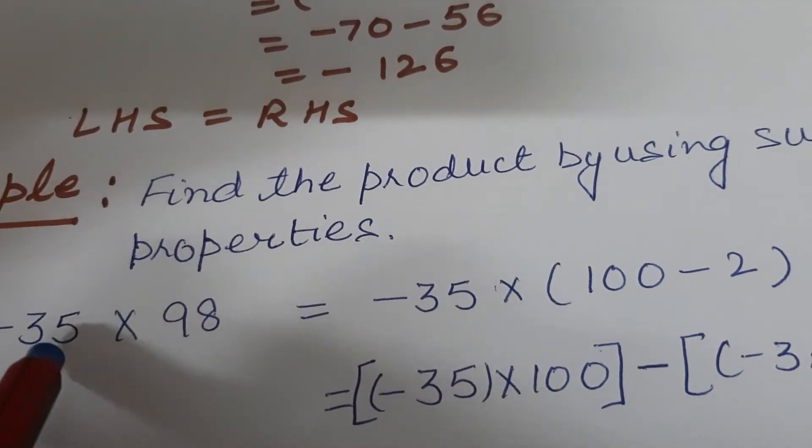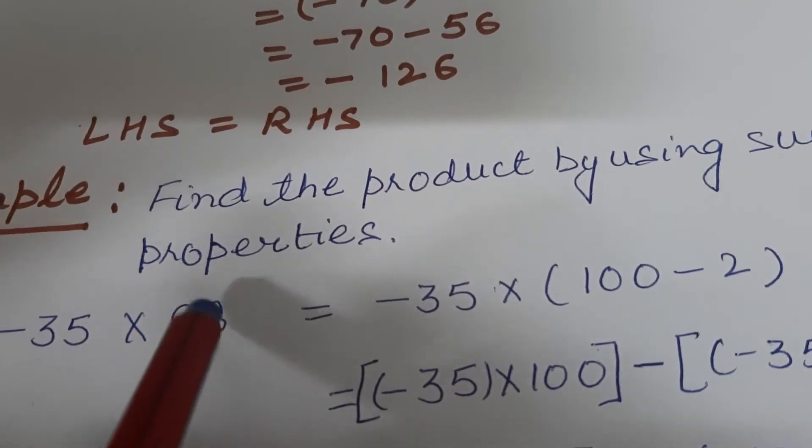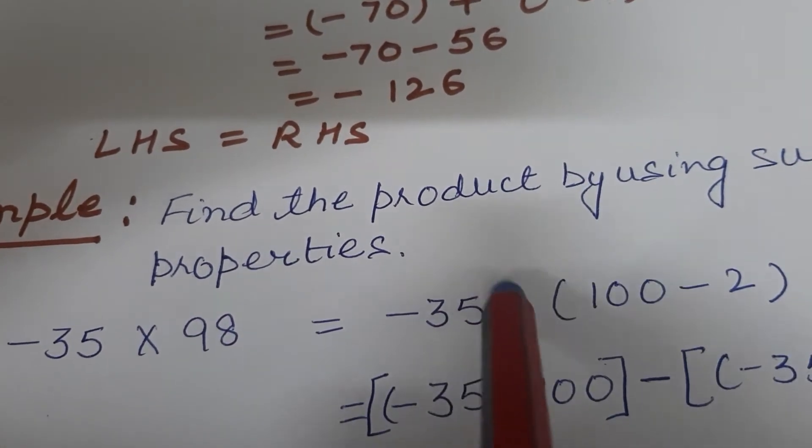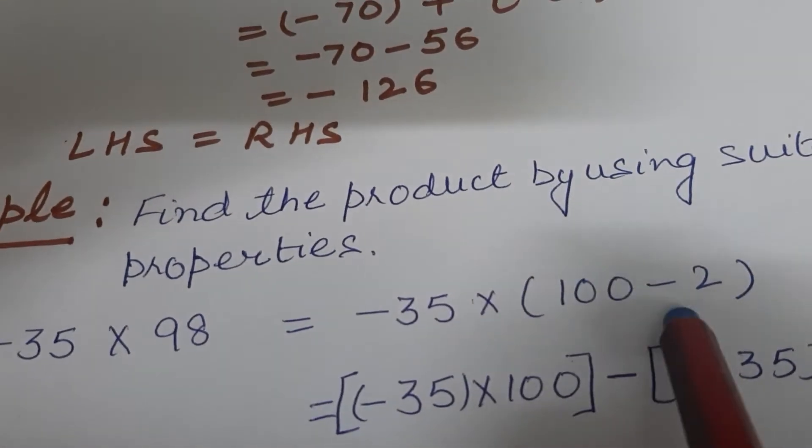So now you can see, students, out of these two, 98 is nearer to 100. So we will break this number. Minus 35 as it is, multiplied. 98 can be written as 100 minus 2.